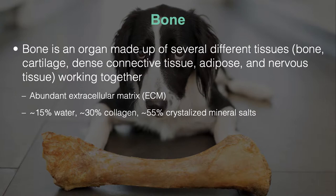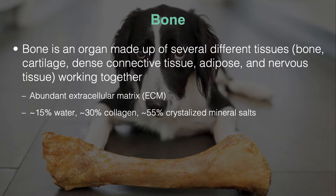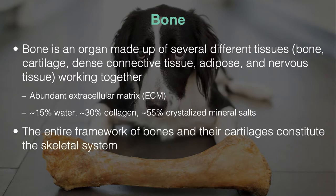There is an abundant extracellular matrix, which is the mineral salts and lattice work that allow the hard rigid structure to be supported. It's made up mostly of crystallized mineral salts, specifically calcium and some phosphate. Collagen is also in play, which gives bone its flexibility — if you dissolved all the calcium and mineral salts away from bone it would be floppy, because of the collagen. And then some water. When you put all the bones in the body together, that's what makes up the skeleton.